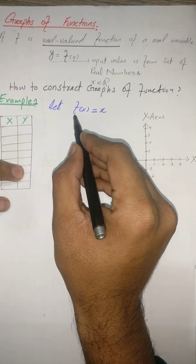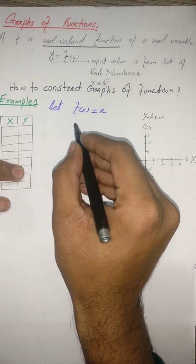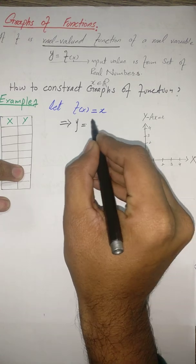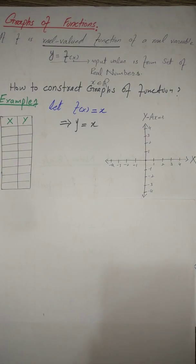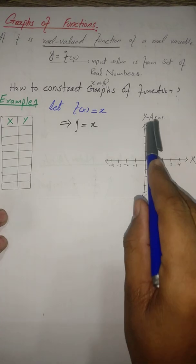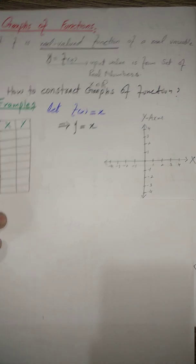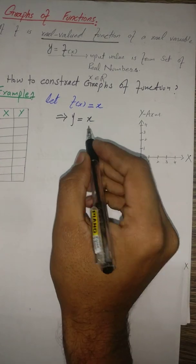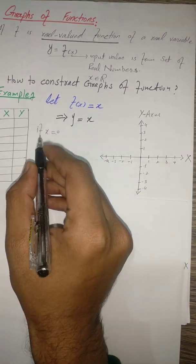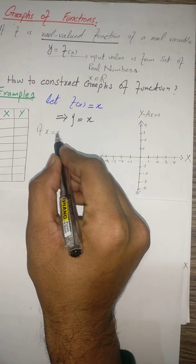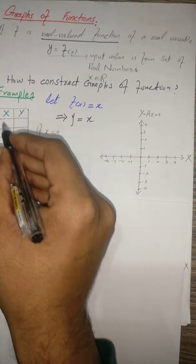As we studied in the last lecture, our output is f(x), and we set y = f(x). So our function is y = x. To construct the graph of this function on the XY plane, we take values from the real number set. If x = 0, then when we substitute this value, y also becomes 0.